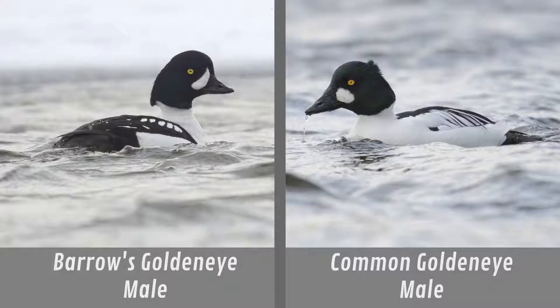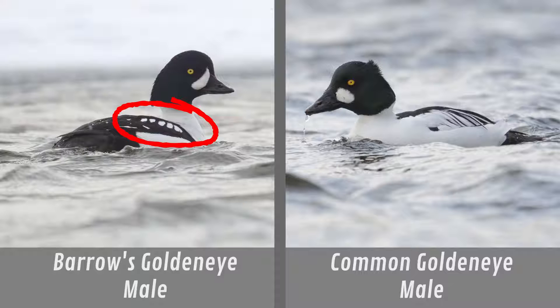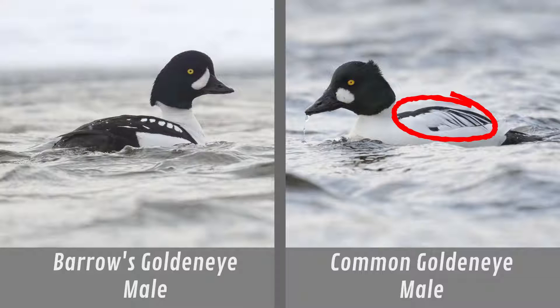The most obvious difference between Common and Barrow's Goldeneye is visual. The two species are easiest to tell apart by looking at the adult males when they have their breeding plumage. Barrow's Goldeneye has distinct white spots on its side, whereas Common Goldeneye has indistinct white segments merging into the white of the body.